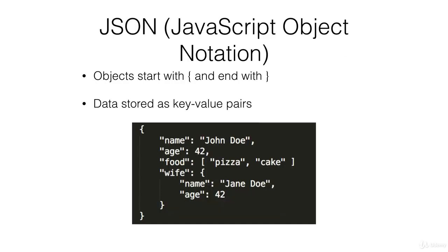Documents stored in MongoDB are in the JSON format. If you're not familiar with what JSON is, that's fine, because it's very easy to understand and it's also very human-readable. JSON stands for JavaScript Object Notation. Objects in JSON start and end with curly braces, and data is stored as key-value pairs.